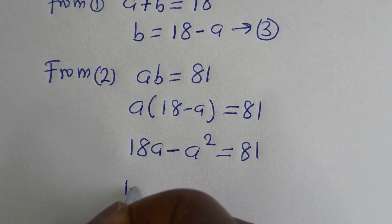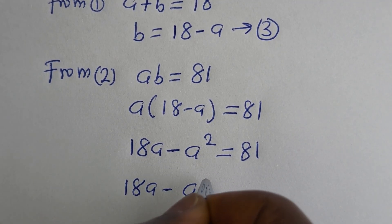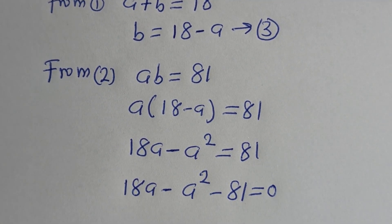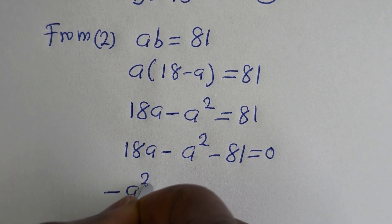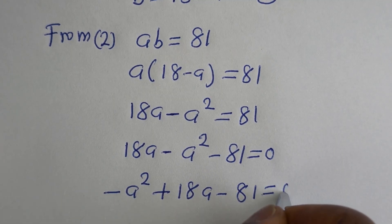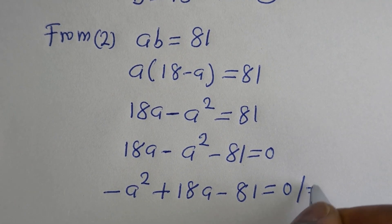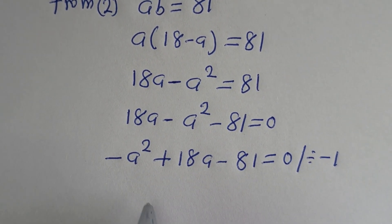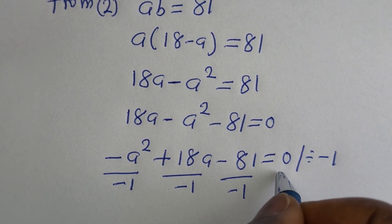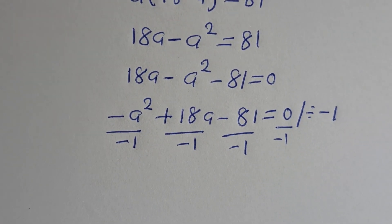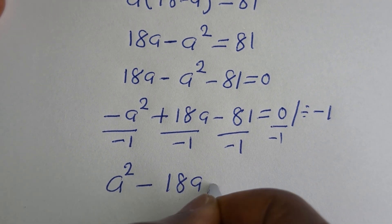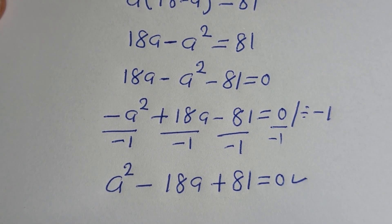Then we have 18A minus A squared minus 81 is equal to 0. Let us put this in standard form: minus A squared plus 18A minus 81 is equal to 0. This is a quadratic equation. Let us divide through by minus 1, giving us A squared minus 18A plus 81 is equal to 0.